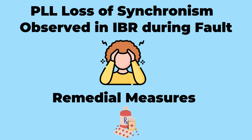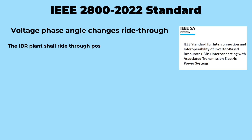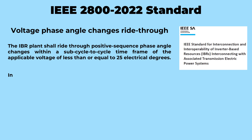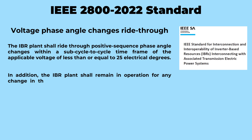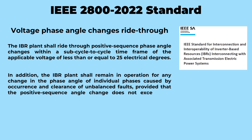Now let us look at what is provided in the IEEE 2800 standard for IBRs. The standard requires IBR plants to have voltage phase angle change ride-through capability. IBR plants should ride through positive sequence phase angle changes, swiftly adapting to voltage fluctuations and seamlessly adjusting to phase angle changes of less than or equal to 25 electrical degrees per sub-cycle. This means that during a fault, if a phase jump of 25 degrees or less is observed, there should be no loss of synchronization, momentary cessation, or inverter tripping on any protection. These criteria are to be defined by the planner and operator through system study.